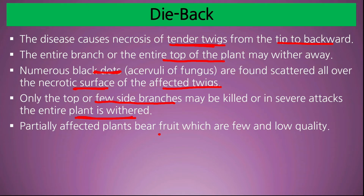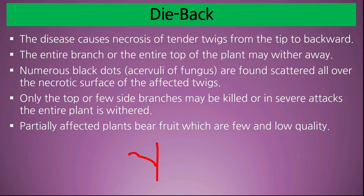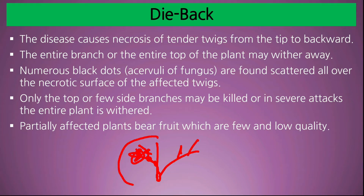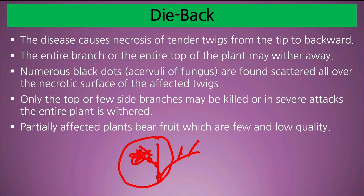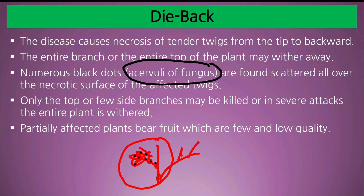Partially affected plants bear fruits which are few and low quality. Die back में growing tip से infection start होता है और नीचे की side grow करता है — धीरे-धीरे पूरा plant मर सकता है, या केवल एक ही side affected हो सकती है। जहाँ पर symptom आते हैं वहाँ black color के acervuli बनते हैं, जो fungus के asexual fruiting body होते हैं, जिनमें conidia बनते हैं।